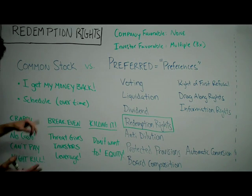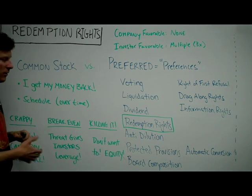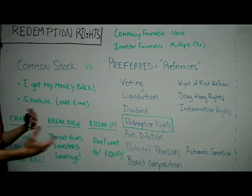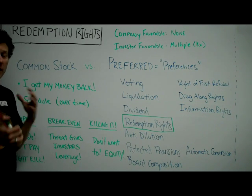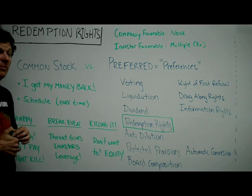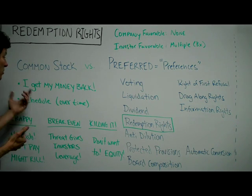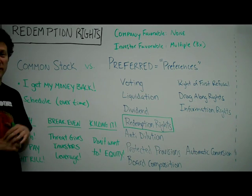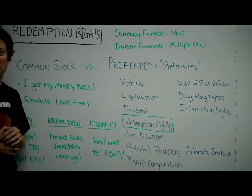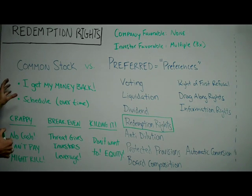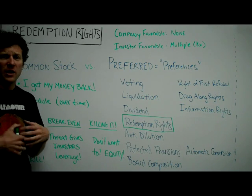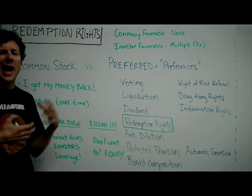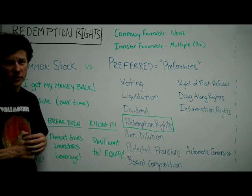Generally they don't just cut you a check for $5 million. It's a scheduled, overtime release of money slowly so that it doesn't kill or drown the company. But essentially you can say, hey, I don't like being an investor anymore, I want my money back. There's a threshold associated with this most times, meaning you have to get some high percentage of preferred stock shareholders to vote to allow someone to exercise their redemption right.